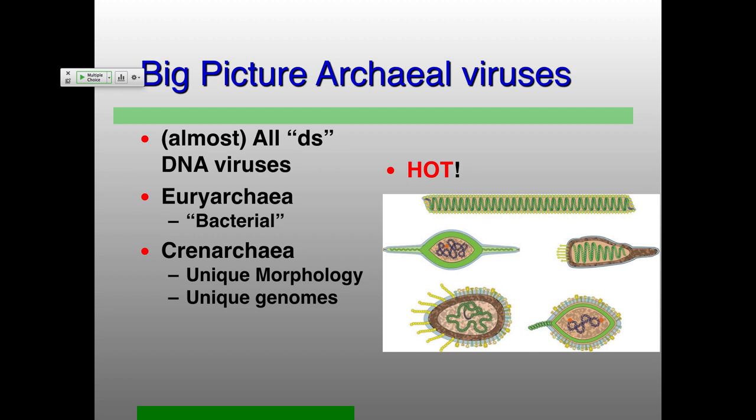The big picture is that almost all of the archaeoviruses that people have found to date are double-stranded DNA viruses, but they vary in terms of genome sizes by a pretty wide range — not quite as big as poxviruses, but still a pretty large range. Euryarchaeal viruses have a tendency to be bacterial in terms of their genome complement and morphology, but this might actually be a little bit of an artifact of how these were first found.